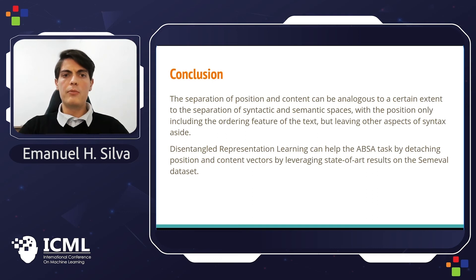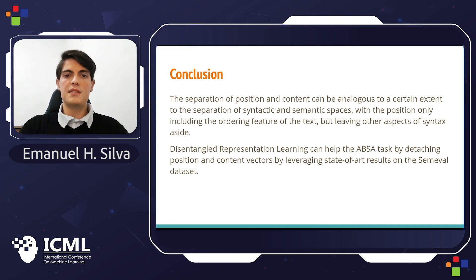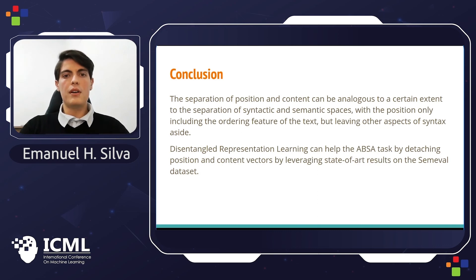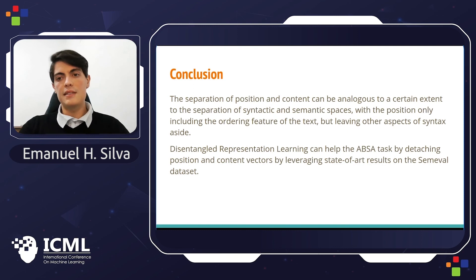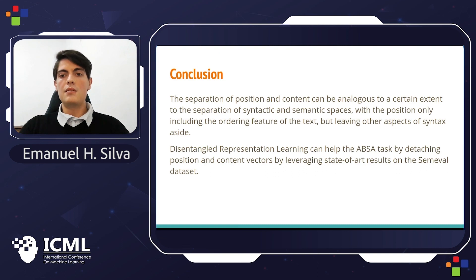The separation of position and content can be analogous, to a certain extent, to the separation of syntactic and semantic spaces, with the position only including the positional features of the text but leaving other aspects of syntax assigned. Disentangled representation learning can help the ABSA task by detaching position and content vectors, leveraging state-of-the-art results on the SemEval dataset.